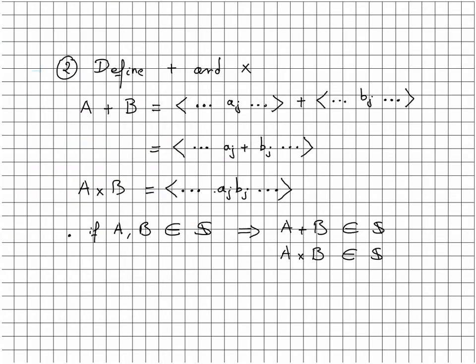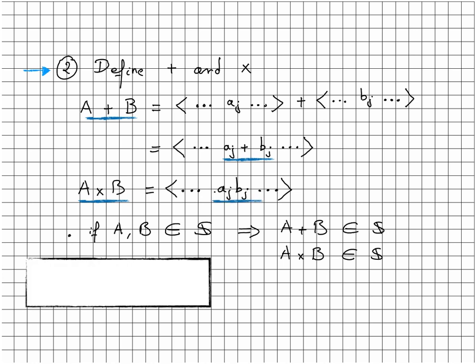Step two, it is to define addition and multiplication between elements of S. Addition of two sequences is simply defined by adding two elements of the sequence. And the same is true here for the multiplication. We also need to verify that S is closed under this operation. In other words, that a plus b and a times b are also Cauchy sequences.